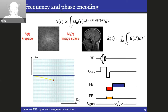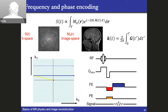Phase encoding is what determines the scan time in practice — it's the time we have to repeat scanning these lines. Frequency encoding is also susceptible to chemical shift artifacts, and there are some differences in how we formulate these things. But from the k-space formalism, we're using gradients to travel through the Fourier transform space of the image and sample all the information needed to represent the image.